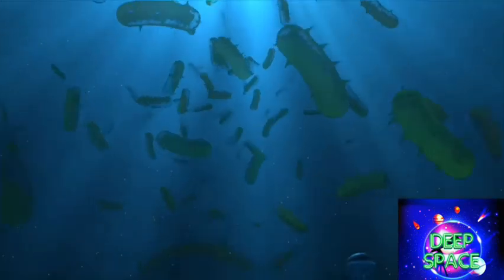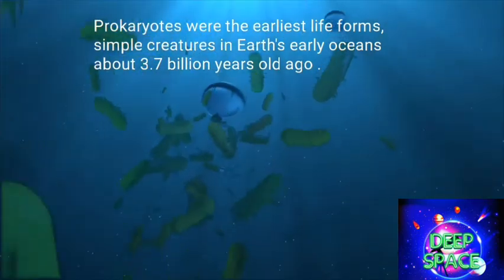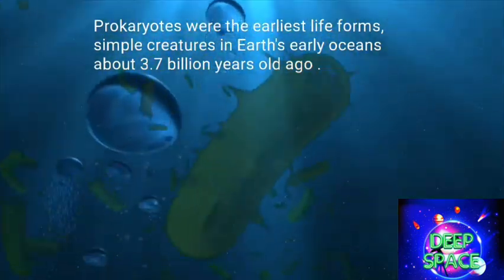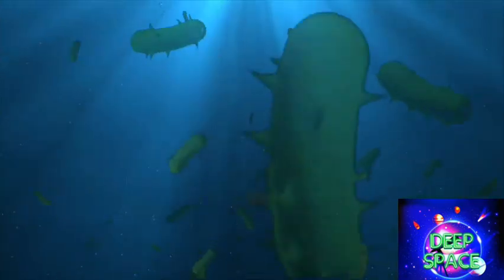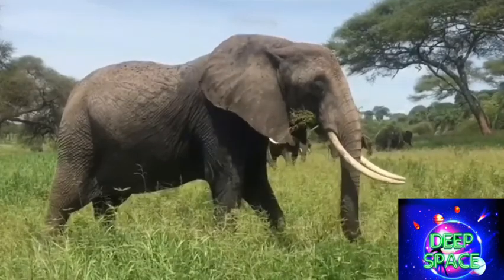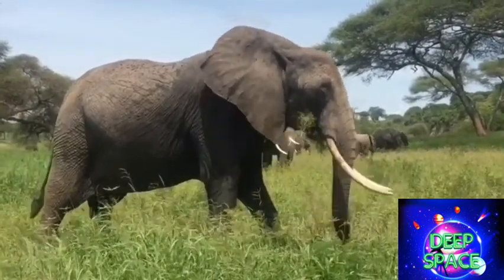Prokaryotes were the earliest life forms, feeding on carbon compounds in Earth's early oceans about 3.7 billion years ago. Later, all life forms started slowly. Of the 8.7 million species of life on Earth, we have only described and named about 25% of life forms on the planet.